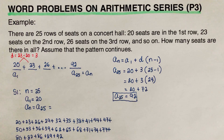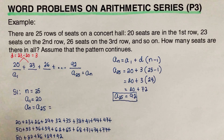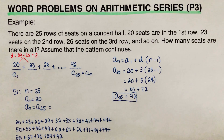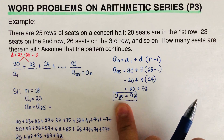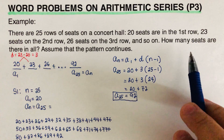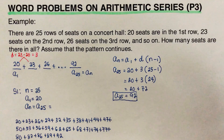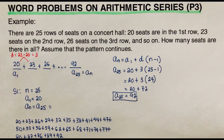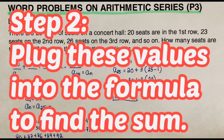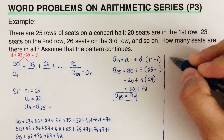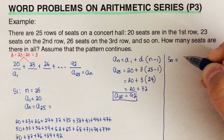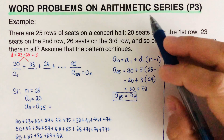The 25th term is 92, which means on the 25th row there are 92 seats. We've now proven that a-sub-25 equals 92. But in this problem we need to find the total number of seats in the hall, so we move on to Step 2: plug the values into the formula to find the sum, S-sub-n.